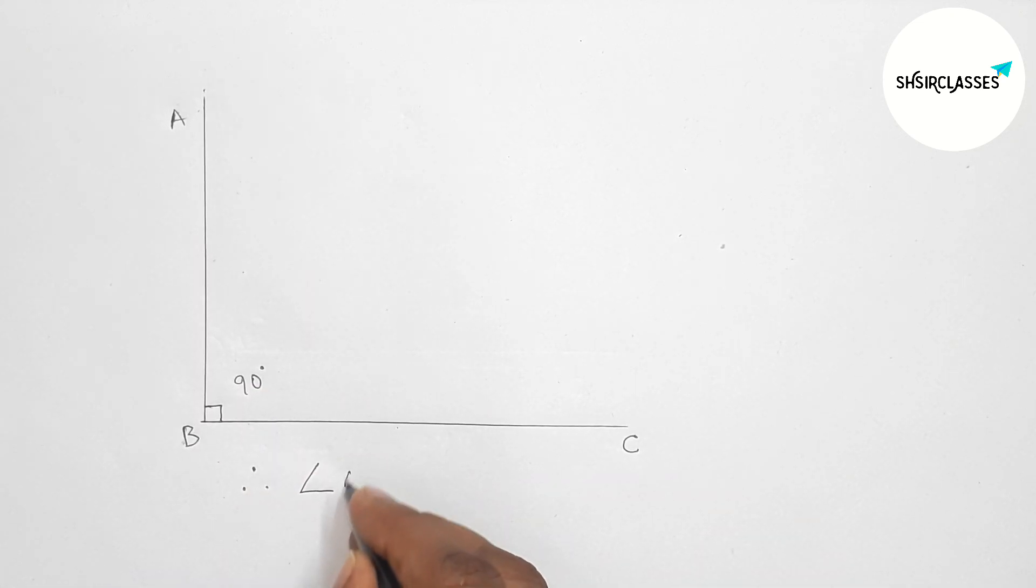Angle ABC equals 90 degrees. That's all, thanks for watching. Please share it with your friends.